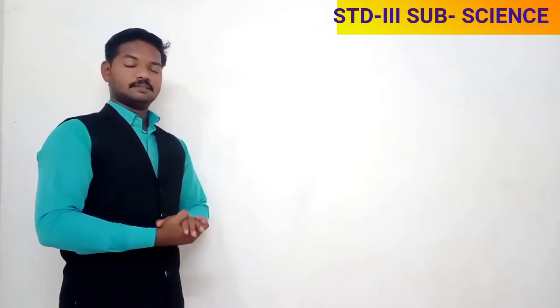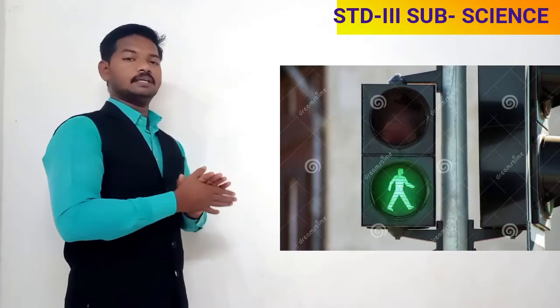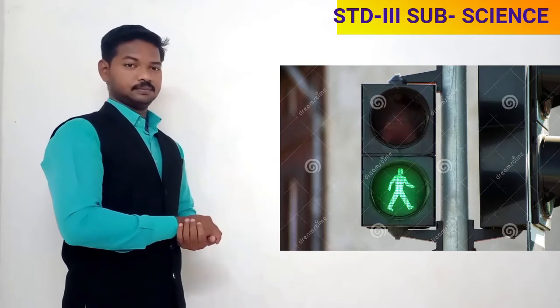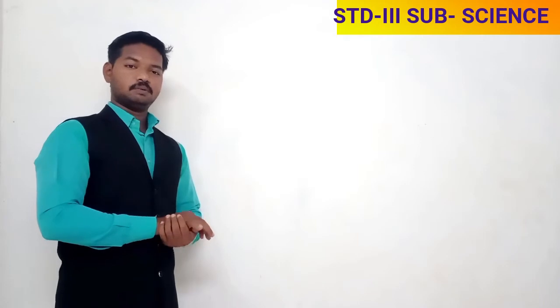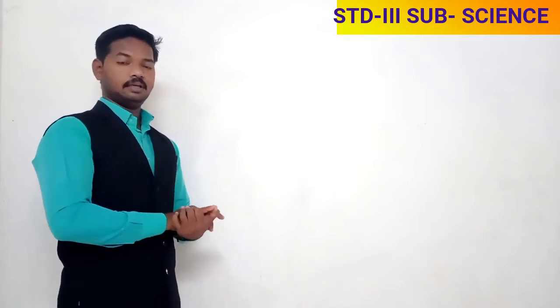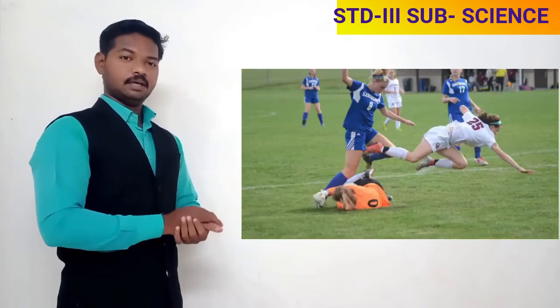Whenever there is a traffic light, follow it and cross the road when the pedestrian light is green. Also, we saw some safety rules for playing in the playground. We should not play rough games and we have to wait for our turn.